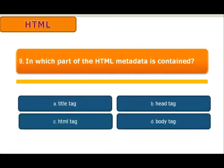Question 9: In which part of the HTML document is metadata contained? Options: A. Title tag, B. Head tag, C. HTML tag, D. Body tag. The answer is B: Head tag. Metadata is information about data. The meta tag provides meta information about the HTML document. Metadata will not be displayed on the page — it is present in the head. The body tag defines the document body, and the title tag specifies the title of the webpage.